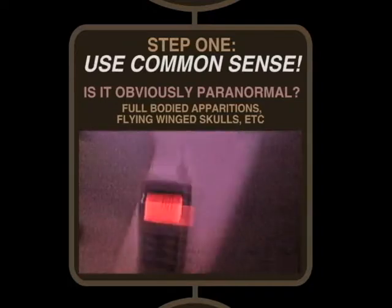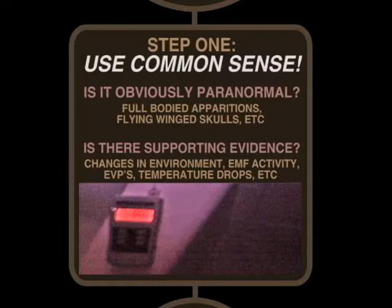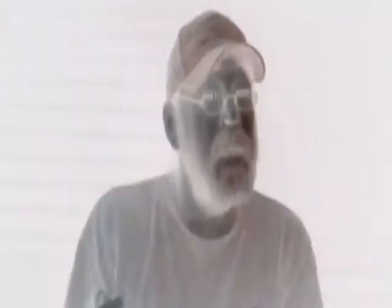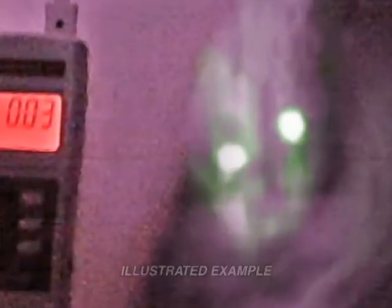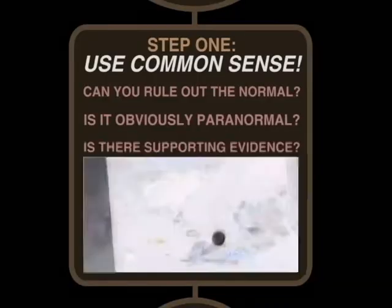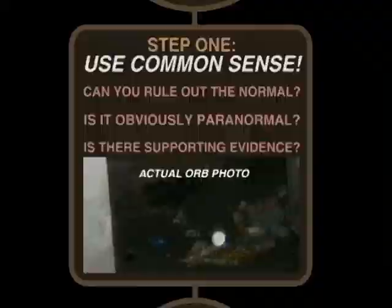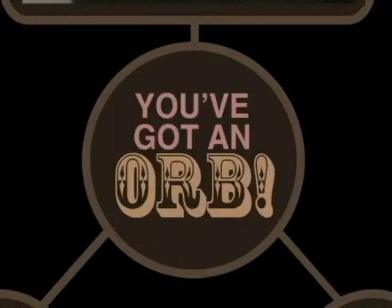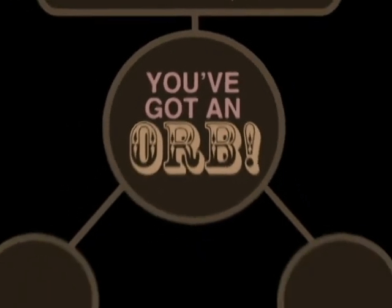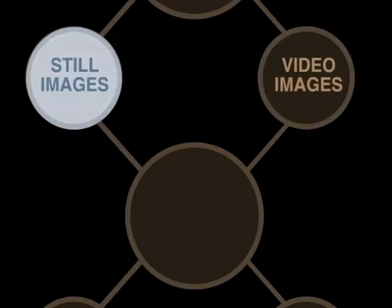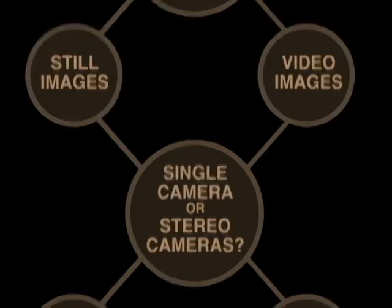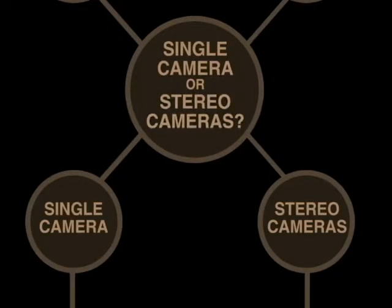Also use your common sense if you're getting good corroborated evidence like EMF readings or temperature drops — then you most likely have a paranormal photo. If you can't use any of this criteria to rule out this photo, congratulations, you've got an anomalous orb on camera. If you have this on video or on a still camera, are you using one camera or two cameras? If you're using one camera, does the object appear in one frame only? If the answer is yes, it could be anything — it's not good evidence.